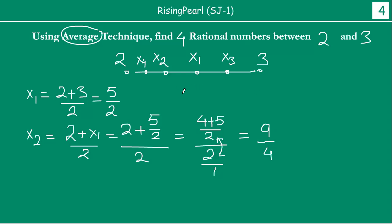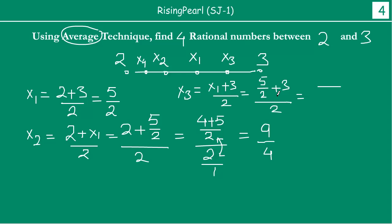Similarly, let us calculate x3. x3 is the average of x1 and 3, which is x1 plus 3 divided by 2, equal to 5/2 plus 3, all divided by 2. The LCM is 2, so we get (5 + 6) divided by 2, all divided by 2, which is 11/2 divided by 2 equals 11/4. So x3 is 11/4.